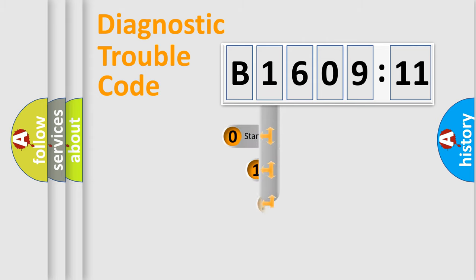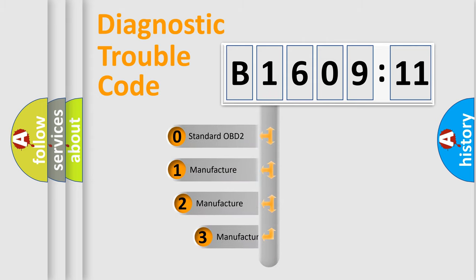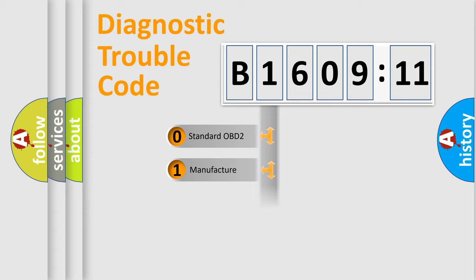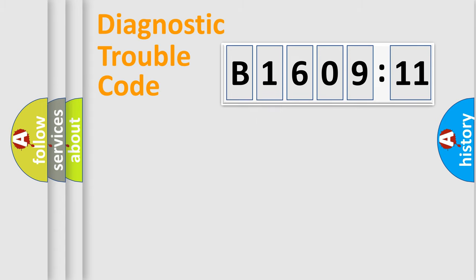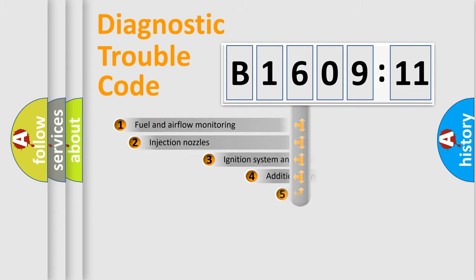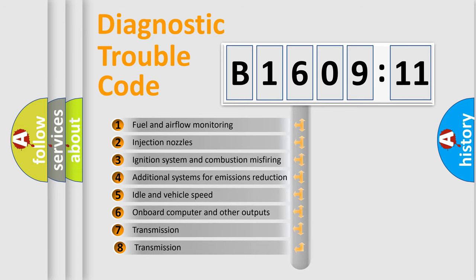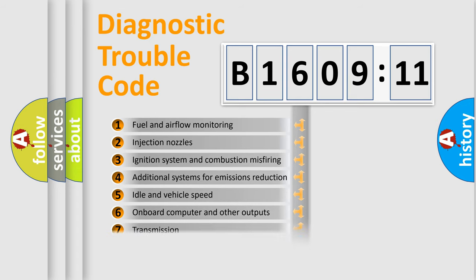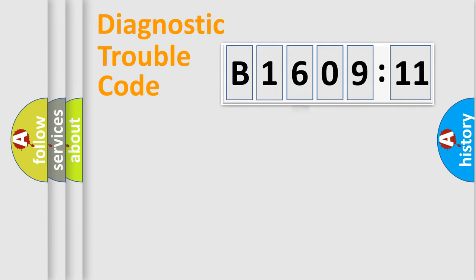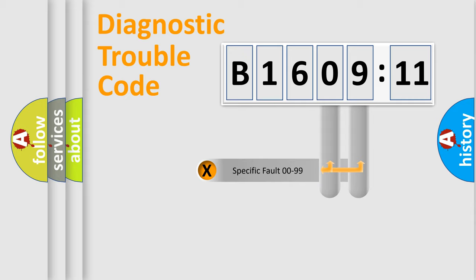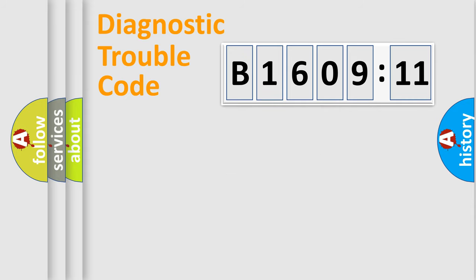This distribution is defined in the first character of the code. If the second character is expressed as zero, it is a standardized error. In the case of numbers 1, 2, or 3, it is a manufacturer-specific error. The third character specifies a subset of errors. The distribution shown is valid only for the standardized DTC code. Only the last two characters define the specific fault of the group.